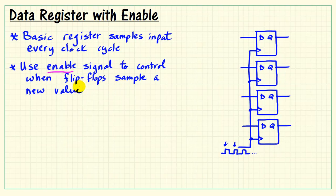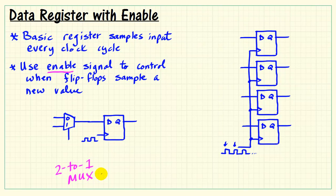Normally, we'd like to have an enable signal that controls when the flip-flops actually sample a new value. We can use a 2 to 1 MUX to feed two different values to the D flip-flop. The enable signal will then control which of those two input values is actually routed to the D flip-flop.